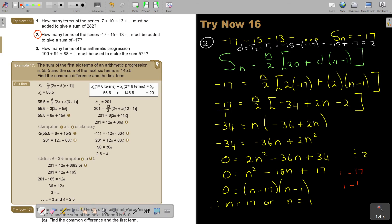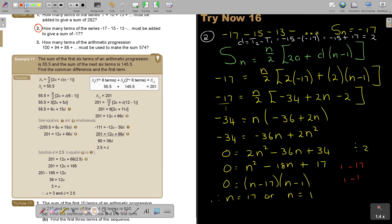And I can just end by saying that. So therefore, one term or 17 terms will give a sum of negative 17. That's how you do it.